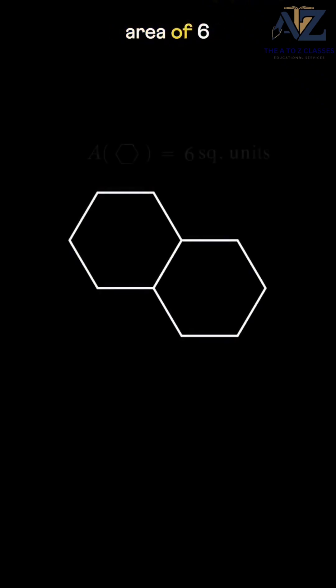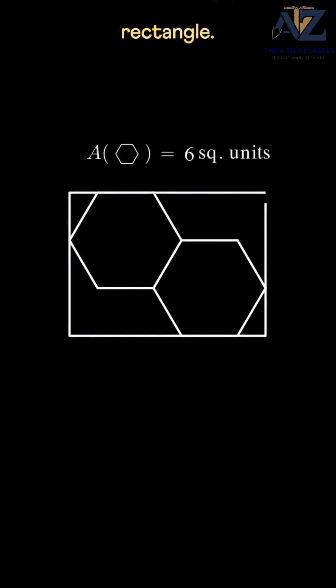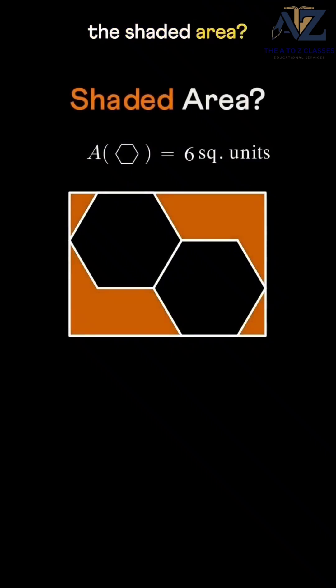Two regular hexagons, each with an area of six square units, are placed inside a rectangle. Can you find the shaded area? Let's solve it visually.